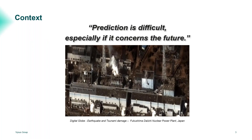A little bit of context to start with. If any of you were hoping to learn to predict the future, I will have to disappoint you — we still cannot predict the future. As someone said, prediction is difficult, especially if it concerns the future. What we will talk about is some ways to approximately predict the future for nuclear accidents — specifically severe accidents like Fukushima, or situations which might evolve into a severe accident.